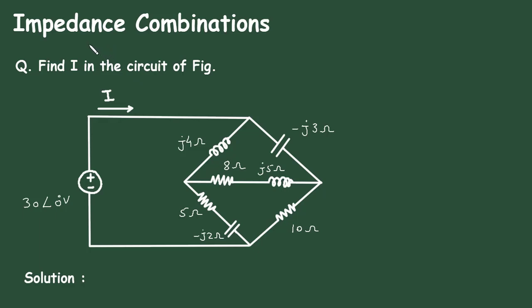In this video, we will see an example on impedance combinations. Find I in the circuit of the figure. For this circuit, we have to find its total current I.